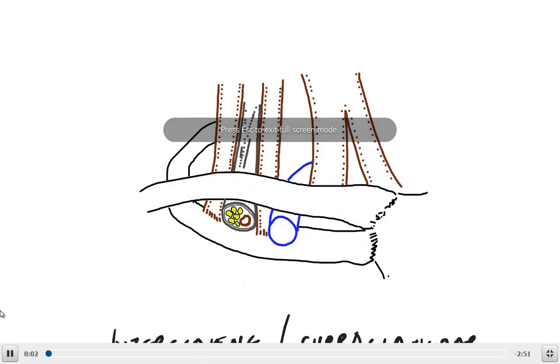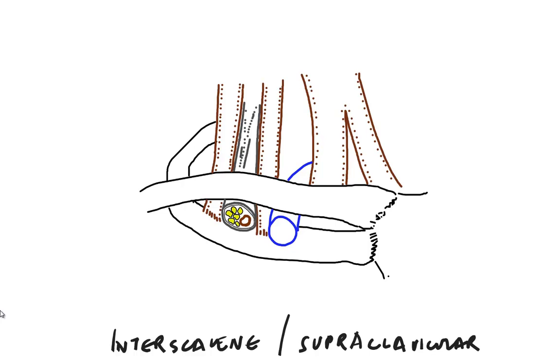In this diagram, we're showing the interscalene anatomy and the supraclavicular anatomy. Let's begin at the C6 level. That is the level of the cricoid cartilage, and the C6 tubercle is also called the Chassignac tubercle.